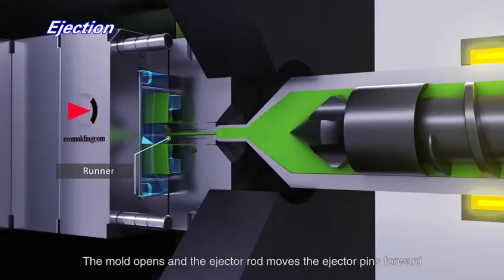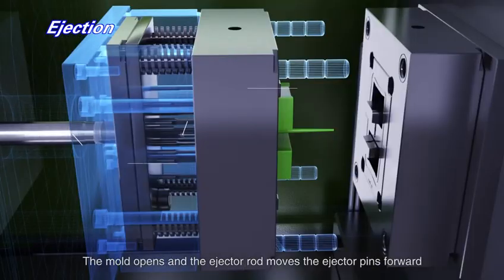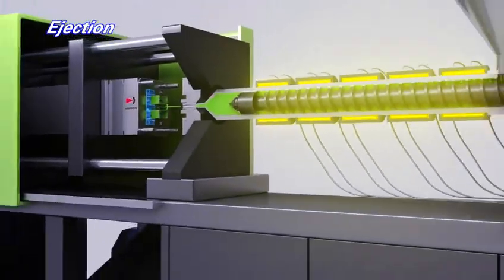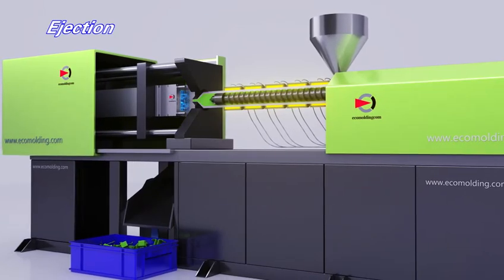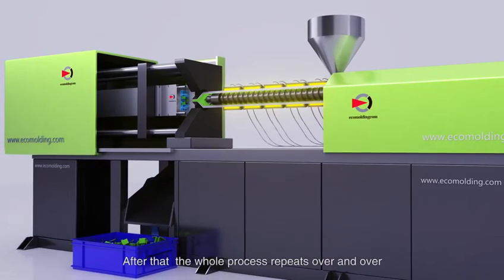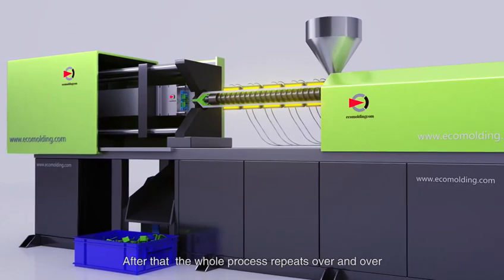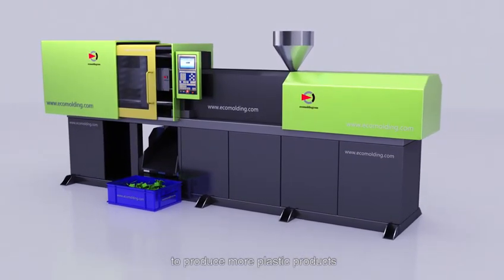The mold opens and the ejector rod moves the ejector pins forward. The part and runner fall and are captured in a bin. After that, the whole process repeats over and over to produce more plastic products.